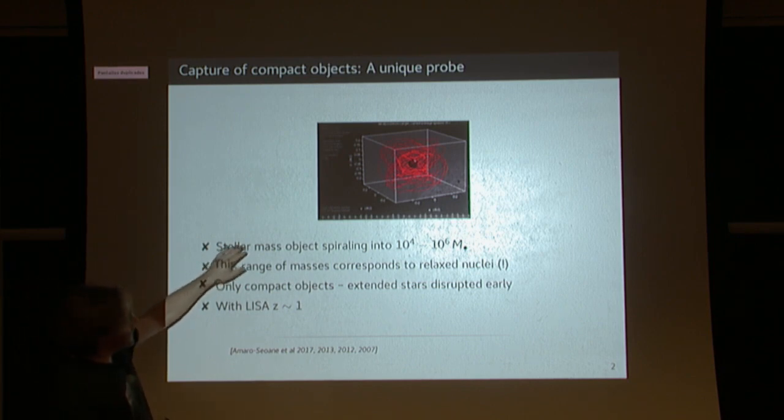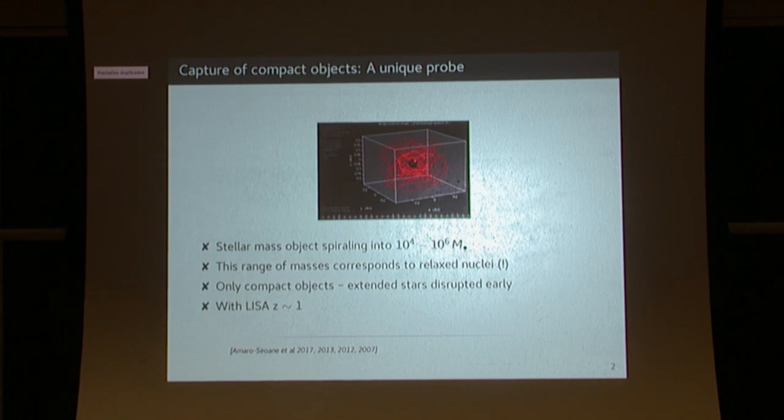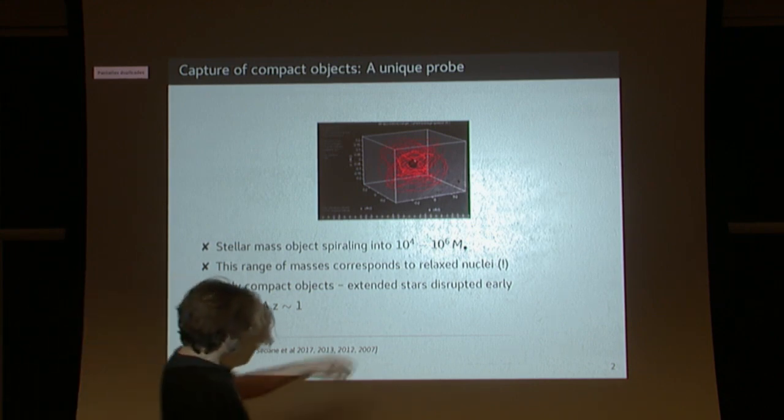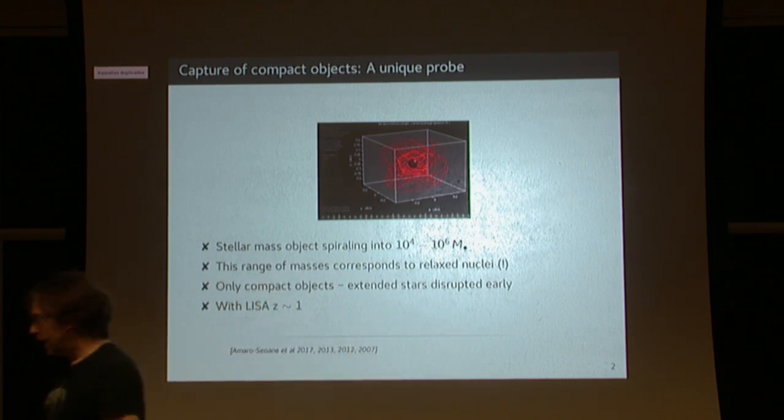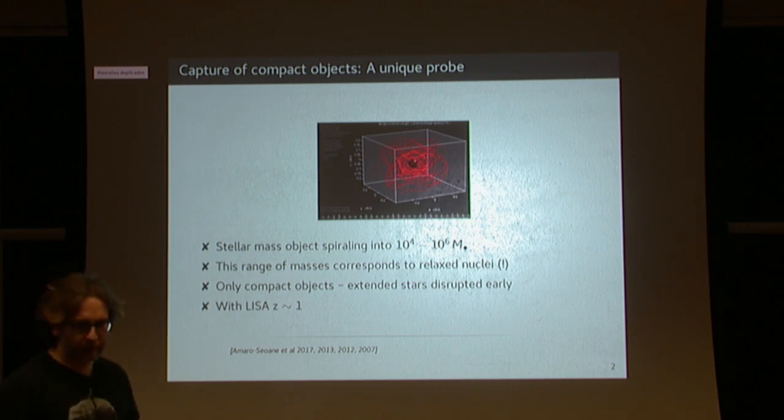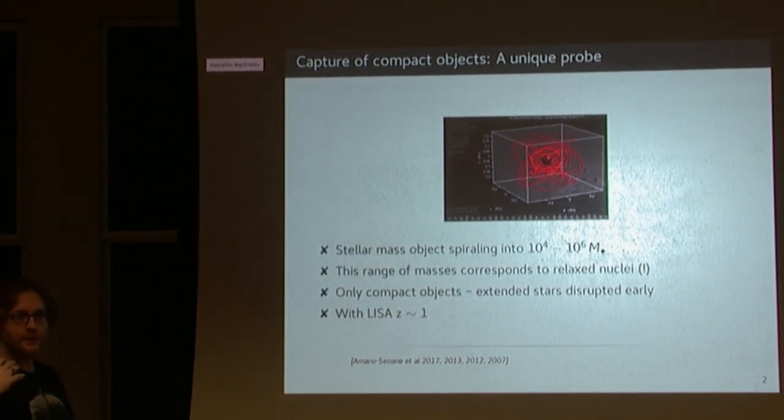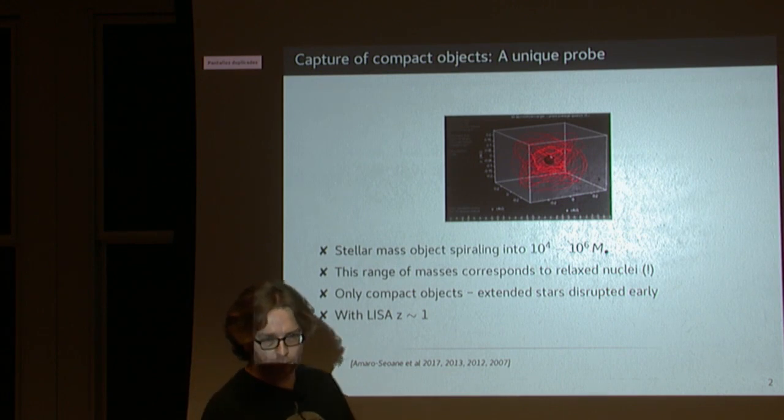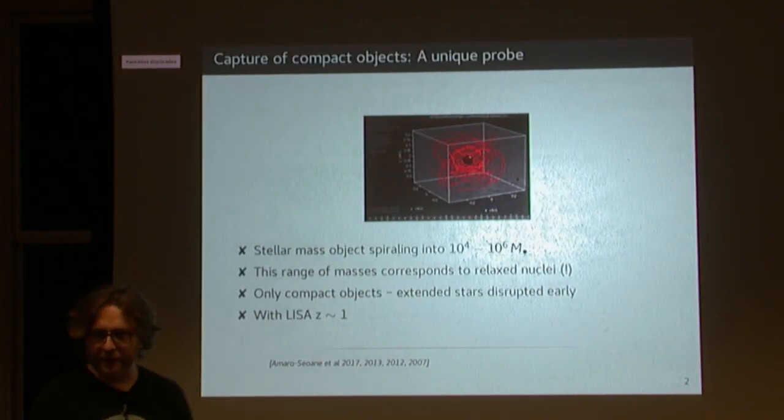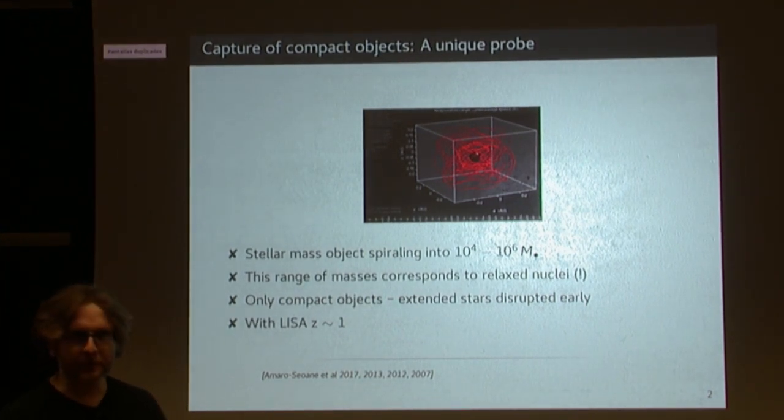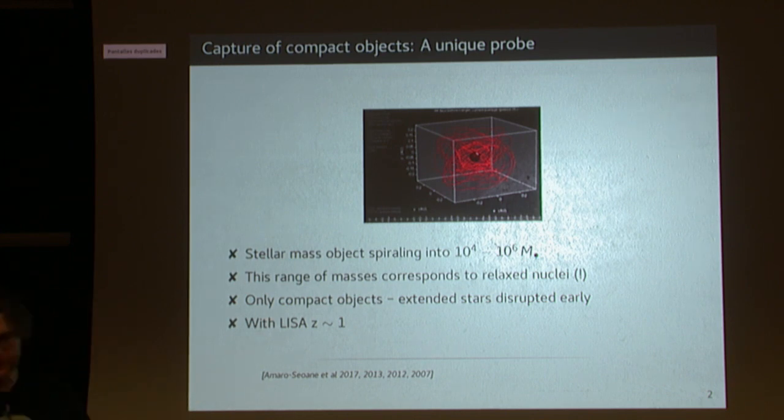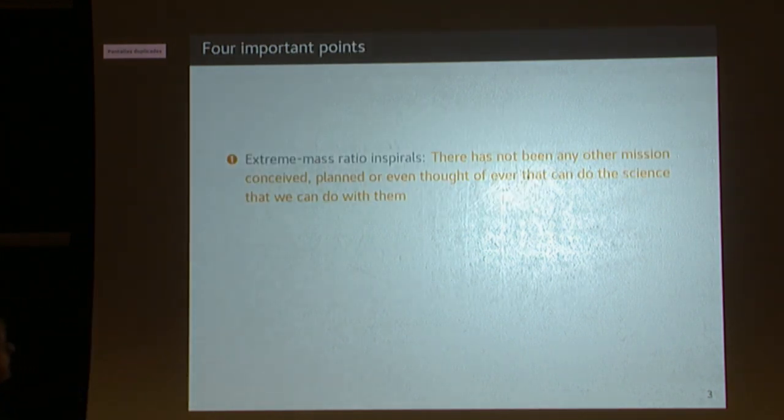Eventually, the compact object would fall into the supermassive black hole. For a space-borne observatory like LISA, we are looking at black holes with masses between 10 to the 4 and 10 to the 6. These range of masses correspond to galactic nuclei which are actually relaxed.